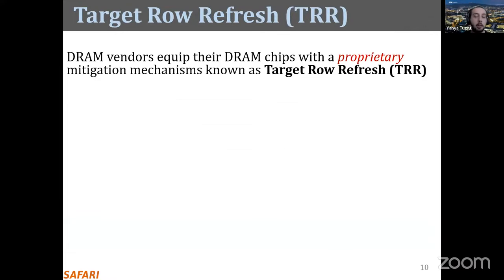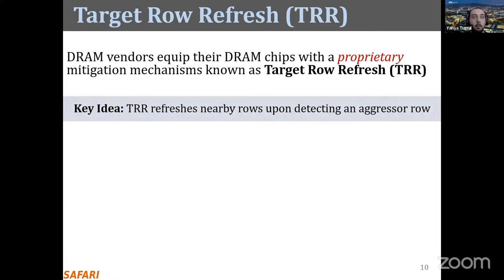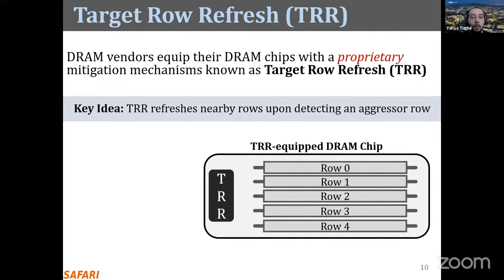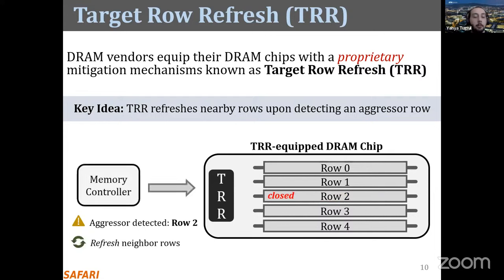To protect their DRAM chips, DRAM manufacturers implement proprietary mitigation mechanisms known as target row refresh, or TRR. The key idea of TRR is to refresh nearby victim rows upon detecting a potential aggressor row. At a high level, the TRR mechanism detects an aggressor as a result of repeatedly activating and precharging the same row, and after receiving a refresh command it piggybacks TRR-induced refreshes on the neighbor victim rows, preventing rowhammer bit flips.